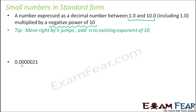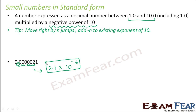Let's take an example. Suppose you have 0.000021. The decimal point is currently here. We need to make enough jumps to form a number between 1 and 10. We bring the decimal point to get 2.1, then multiply by a negative power of 10. The number of jumps taken is 1, 2, 3, 4, 5, 6 — so it will be 10 to the power −6.